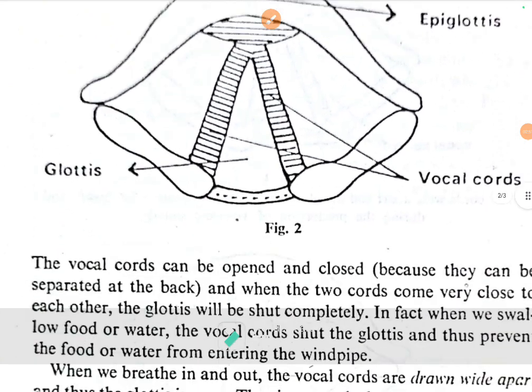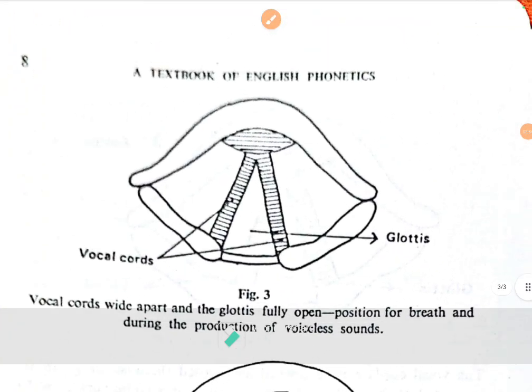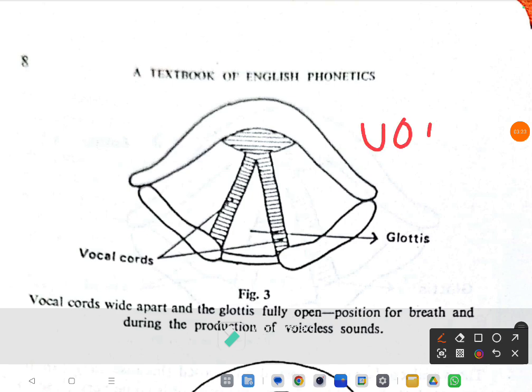So what happens — when we speak, certain sounds like pa, ta, kha — there are nine such sounds. When we say pa etc., these vocal cords are wide open like this. When these vocal cords are wide open and sounds are produced, we call them voiceless sounds.